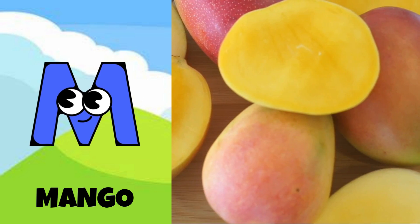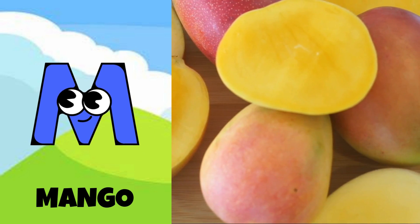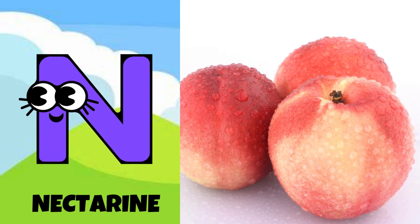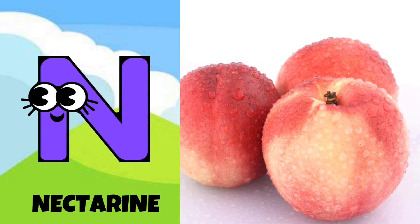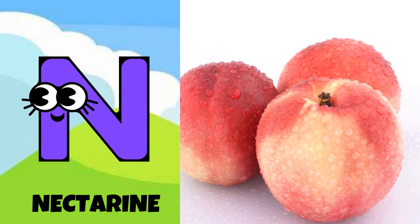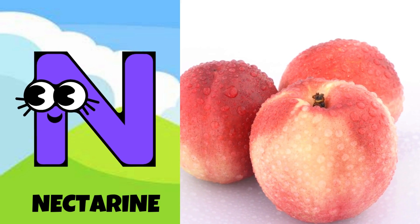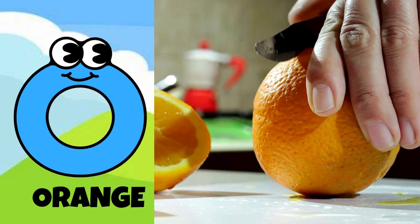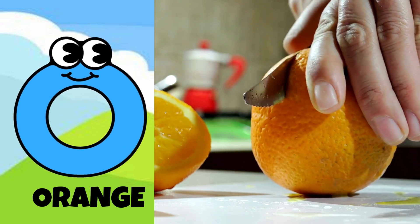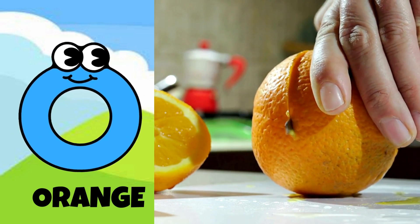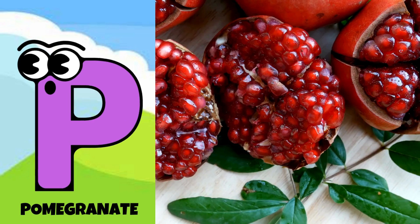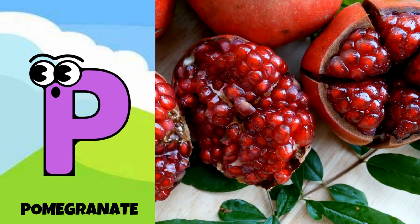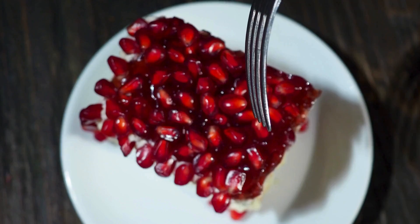M is for mango, ma-ma-mango. N is for nectarine, n-n-n-nectarine. O is for orange, o-o-orange. P is for pomegranate, p-p-pomegranate.